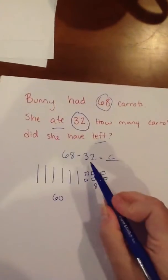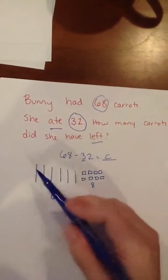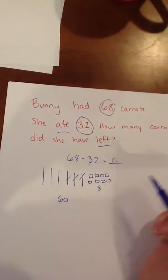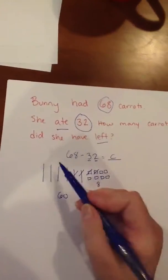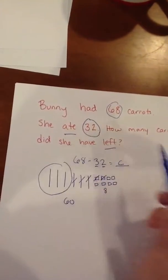We're going to take away how many tens? Three tens. So 10, 20, 30. And how many ones? Two ones. 1, 2. So let's circle how many total we have left.